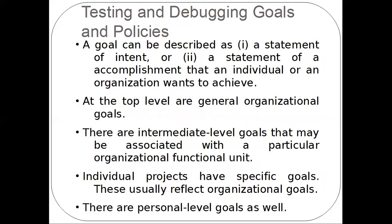Next are testing and debugging goals and policies in an organization. A goal is a statement of intent — it is the purpose, or what an individual or organization wants to achieve. There are three levels: at the top is the organizational goal; at the intermediate level, goals are expressed in terms of functional units; and at the personal level, goals reflect individual contribution. Each individual project should also have specific goals that reflect the organizational goals.